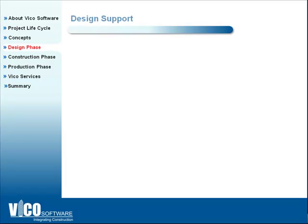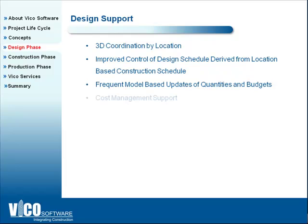The low-hanging fruit in the design phase is 3D coordination. A lot of companies already use building information models to coordinate different trades in three dimensions, and most companies, when they say they use BIM, typically mean 3D coordination. However, in the VICO process, you also add the ability to manage cost and set targets. Value engineering becomes a different concept — today it often means taking the design and removing the valuable parts to reduce cost. But when you have an integrated system monitoring cost and changes throughout the design phase lifecycle, value engineering truly becomes value to the owner and value to the team.